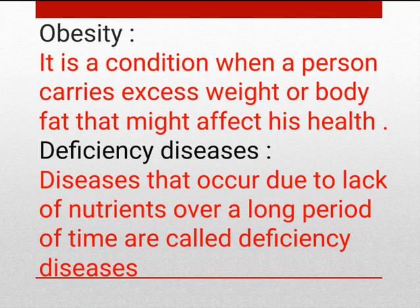So those were the 3 tests for checking whether a food item has carbohydrates, proteins, or fats. We have already discussed all the other nutrients apart from these — vitamins, minerals, roughage, and water.